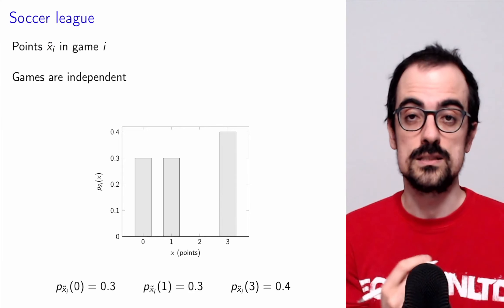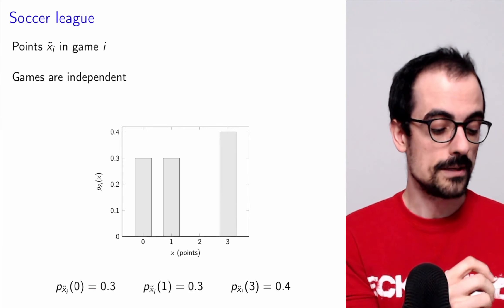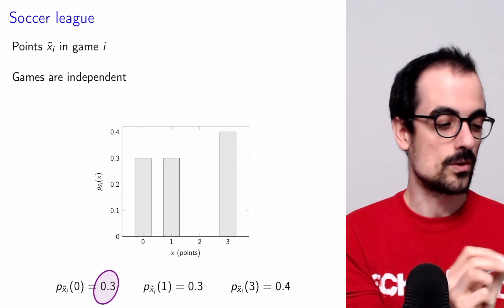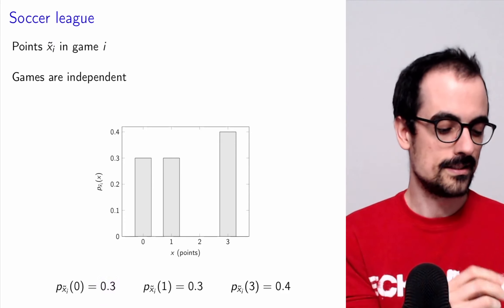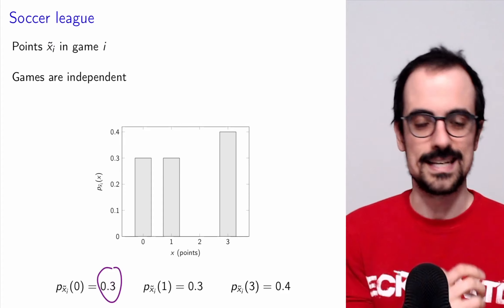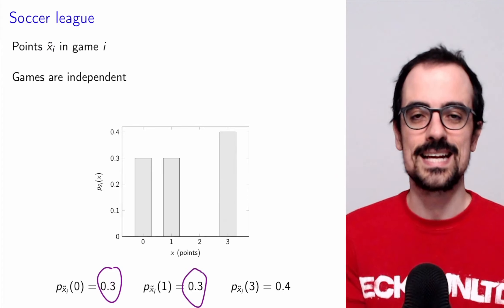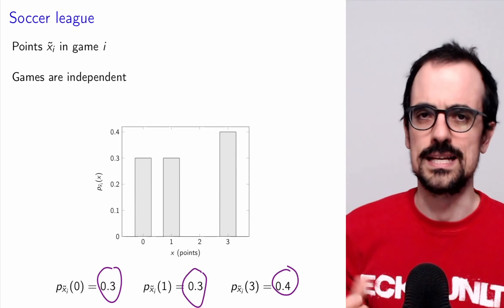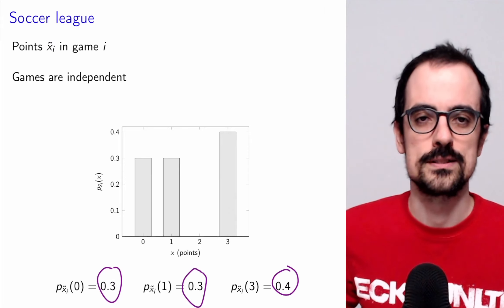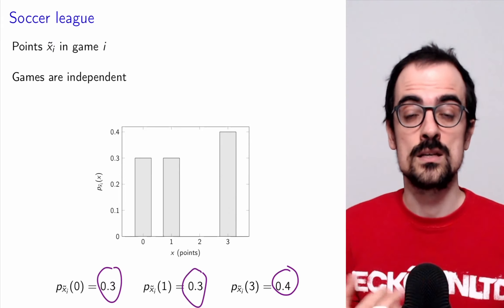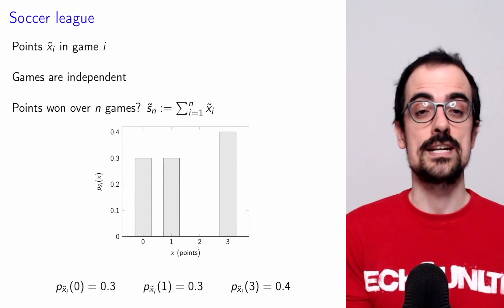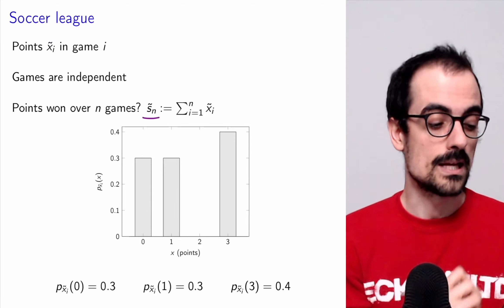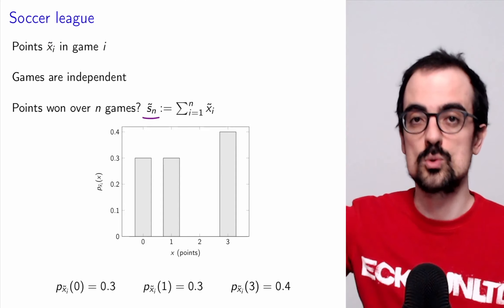The probability that the team gains zero points in a game is 0.3 — that they lose and gain zero points. The probability that they gain one point is 0.3 — that they tie. And 0.4 that they win and gain three points. In most soccer leagues you gain either 0, 1, or 3 points, and the games are independent. We want to characterize the distribution of the number of points that the team wins over n games. This is represented by random variable S, which is the sum of X1, X2 up to Xn.